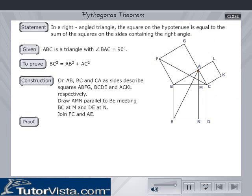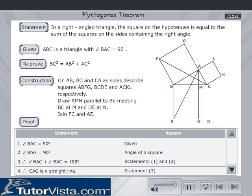Proof: It is given that angle BAC = 90°. Angle BAG = 90° since it is one of the angles of square BAGF. Therefore, angle BAC + angle BAG = 180°. Therefore, CAG is a straight line.